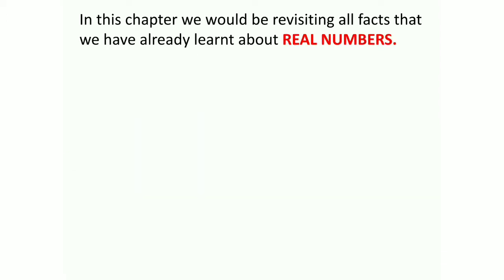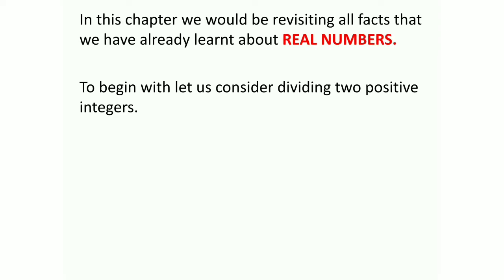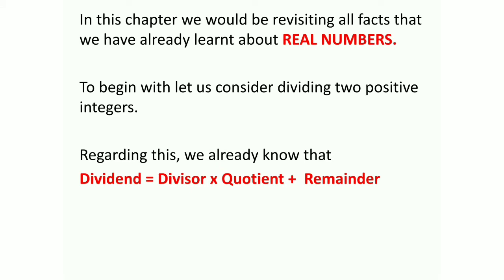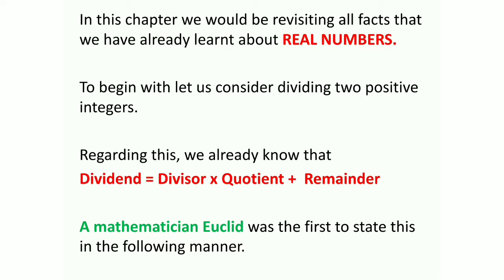In this chapter, we would be revisiting all facts that we have already learnt about the real numbers. To begin with, let us consider dividing two positive integers. We already know that dividend is equal to divisor into quotient plus the remainder. Whenever we wanted to check whether our division is correct, we would find divisor multiplied with the quotient and add the remainder; that result should equal the dividend. A mathematician Euclid was the first to state this formally — we call it Euclid's Division Lemma.